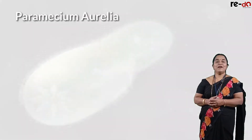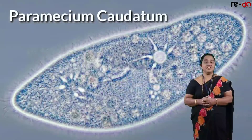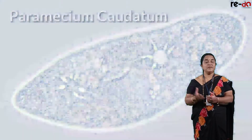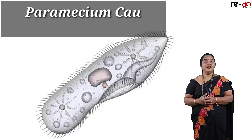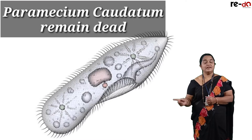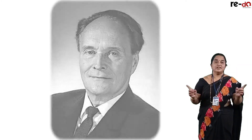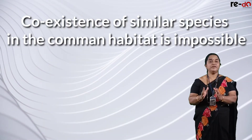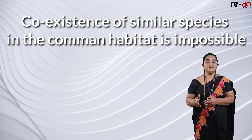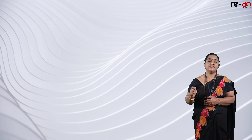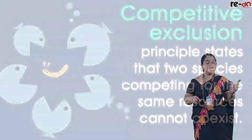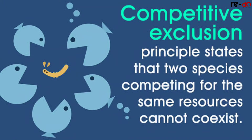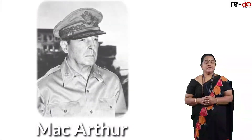Gauze conducted an experiment on Paramecium aurelia and Paramecium caudatum. He grew both species in a petri dish and after some days found that Paramecium aurelia survived while Paramecium caudatum's numbers reduced. So Gauze stated that co-existence of similar species in the same habitat is impossible — it leads to competitive exclusion of the weaker species. This is popularly known as the Competitive Exclusion Principle.